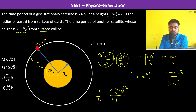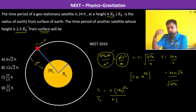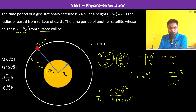The height is 2.5Re from the surface, so from the center of the earth it is 3.5Re. Therefore T2 equals k times (3.5Re)^(3/2). Taking the ratio T1/T2, the k and Re terms cancel, giving (7/3.5)^(3/2) = 2^(3/2).